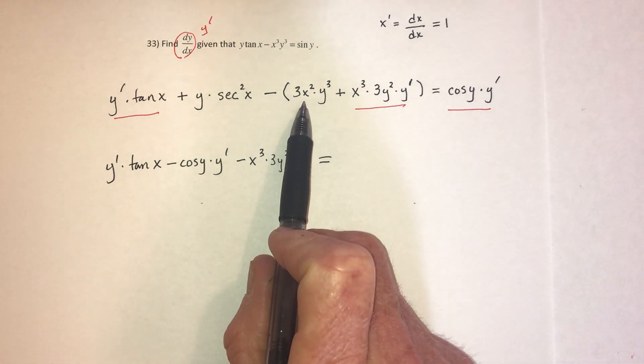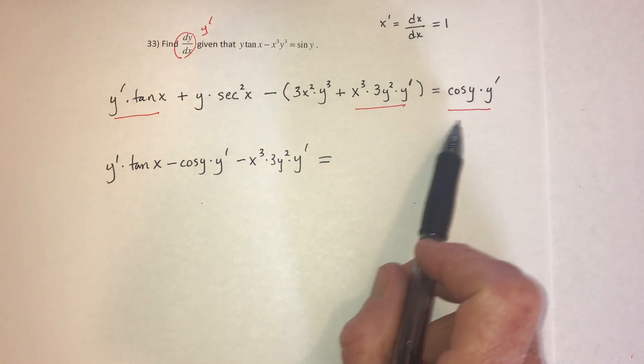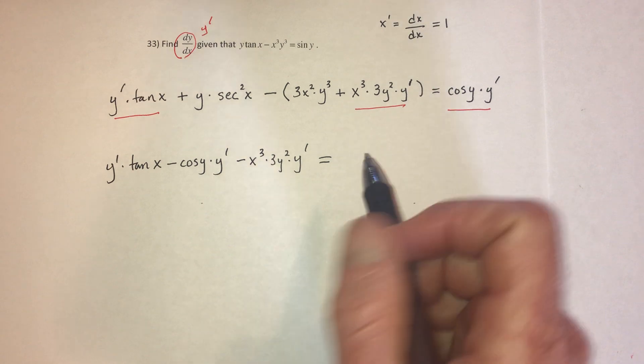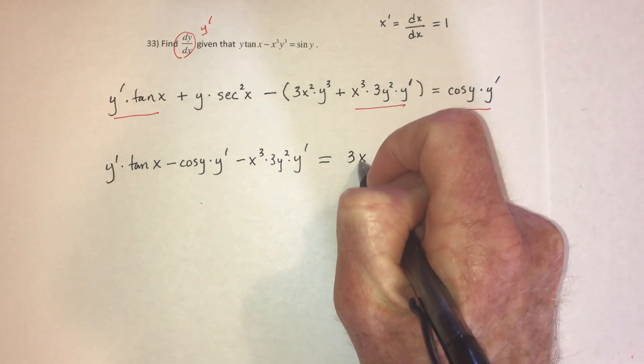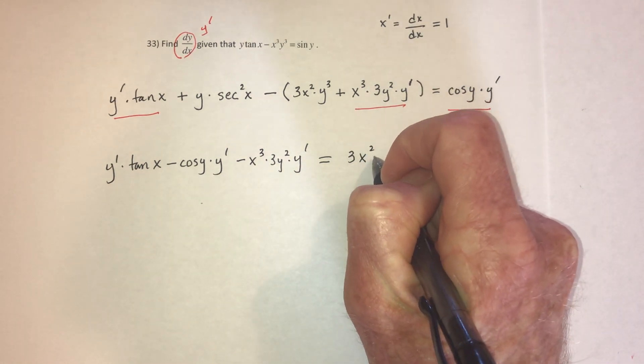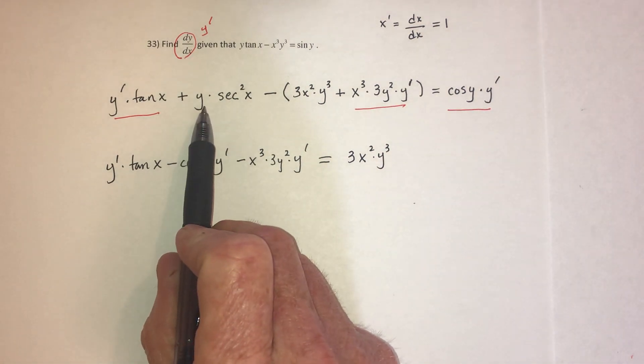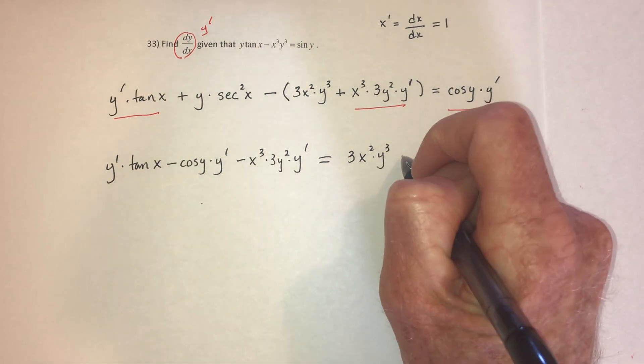Now, those things that don't have a y prime, move them to the right side. So this one is negative right now, so I could add this to the other side. Becomes positive 3x squared times y cubed. And also this term doesn't have y prime, so subtract that from both sides.